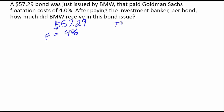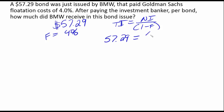The way we look at this is that our total issue is equal to the net issue divided by one minus our flotation costs. The total issue — the amount sold to investors — is $57.29. The net issue is the amount BMW is actually going to receive, minus flotation costs. Remember, this is not one minus four; it's one minus 0.04. We have to turn that percentage into decimal format.